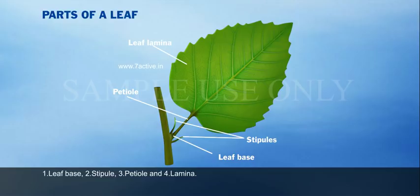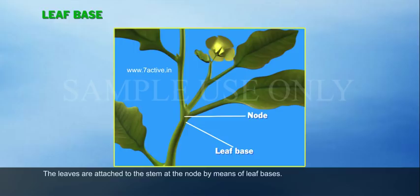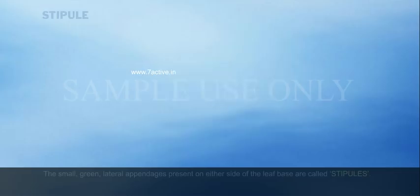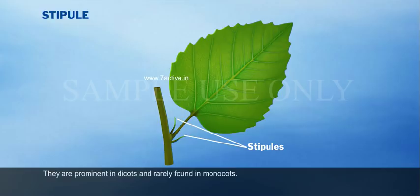Leaf base: the basal part of the leaf is called leaf base. The leaves are attached to the stem at the node by means of leaf base. Stipule: the small green lateral appendages present on either side of the leaf base are called stipules. They are prominent in dicots and rarely found in monocots. They protect the axillary buds in developing stages.